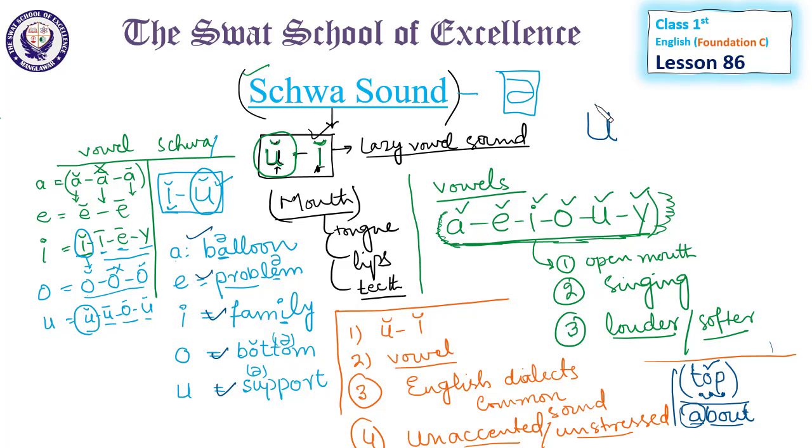This is called a lazy vowel sound. It's lazy because you don't need much movement of the tongue, lips, or teeth to make the schwa sound. That's why it's the most common sound in English dialects.